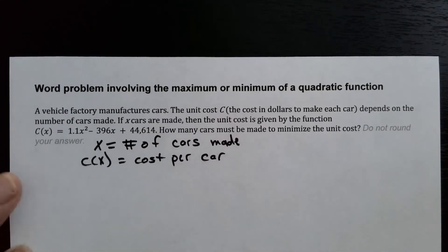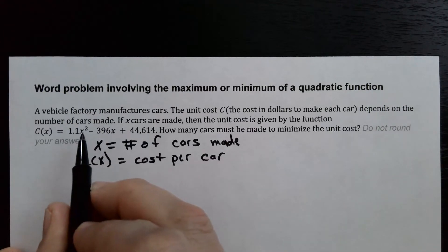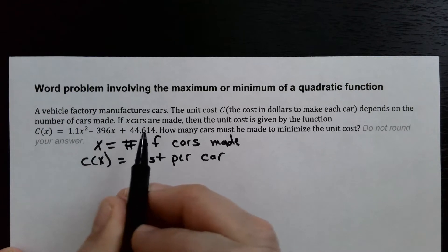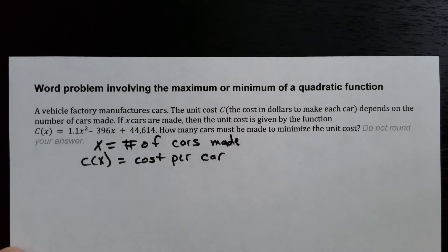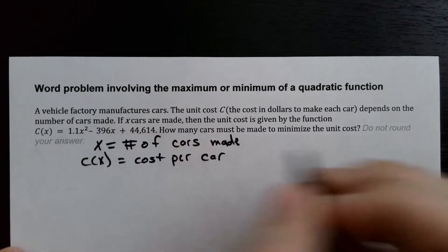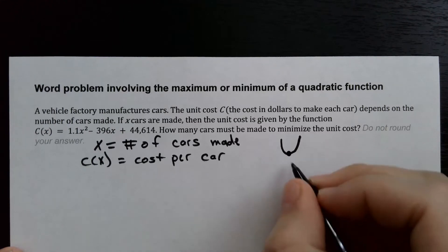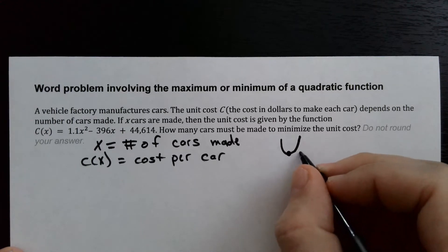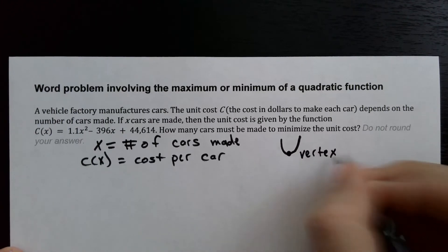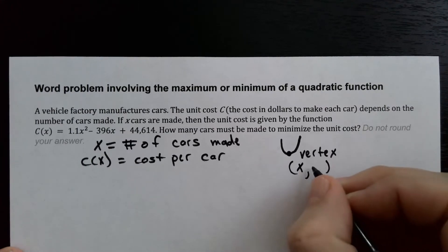We're asked to minimize the unit cost. We recognize this is a parabola: 1.1X squared minus 396X plus 44,614. Since the coefficient in front of X squared is positive, this parabola opens upward, so the vertex represents the minimum.